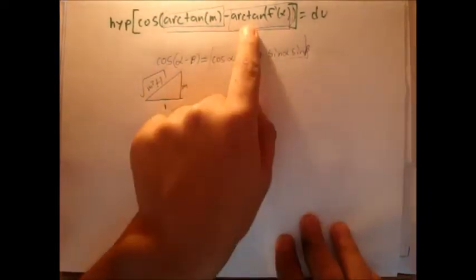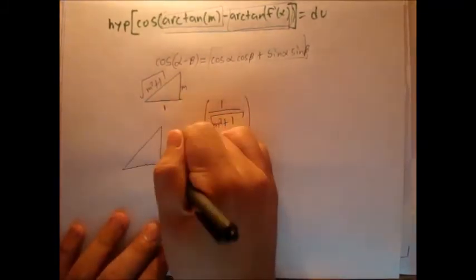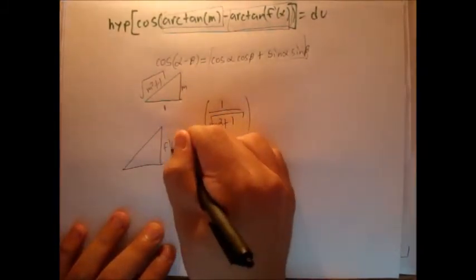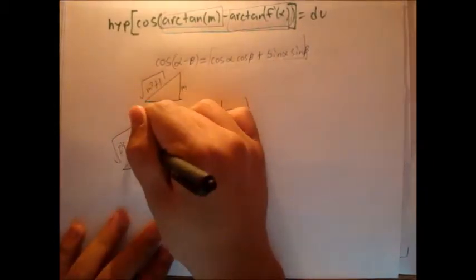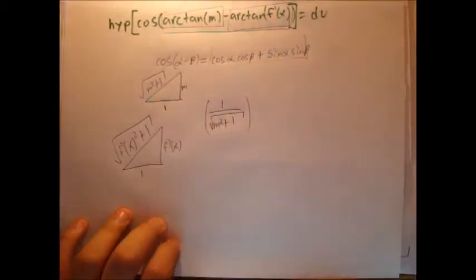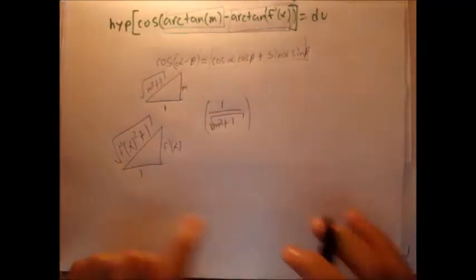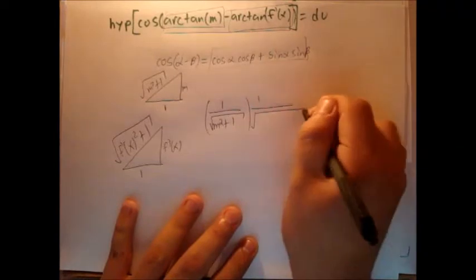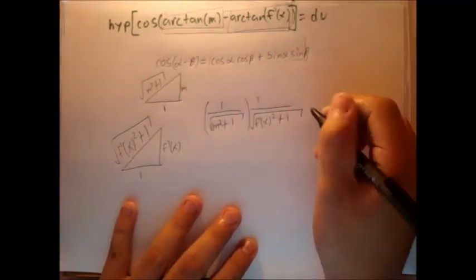And then cosine of beta arctangent f prime of x. We'll use the same triangle. f prime of x, 1, and here's the square root of f prime x squared plus 1. So cosine of beta, that's simply going to be 1 over f prime of x squared plus 1.